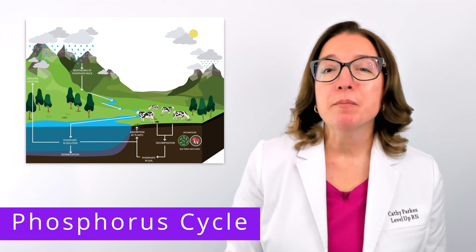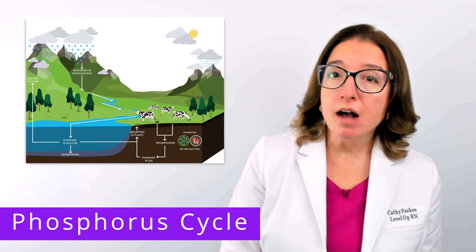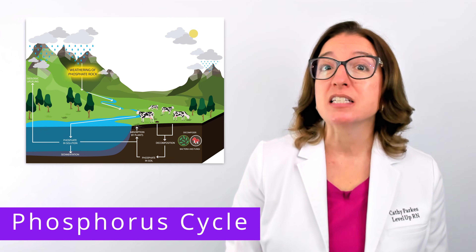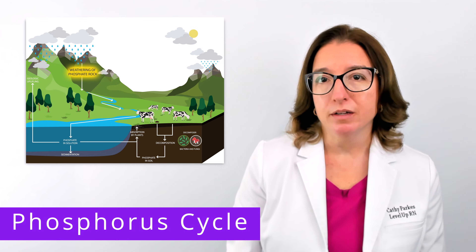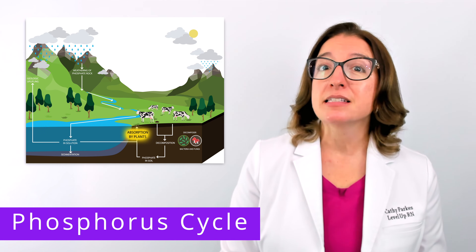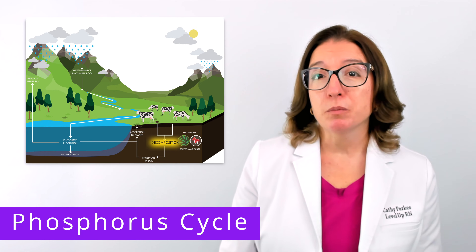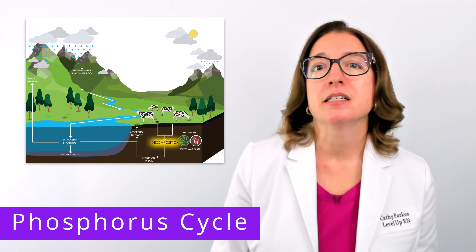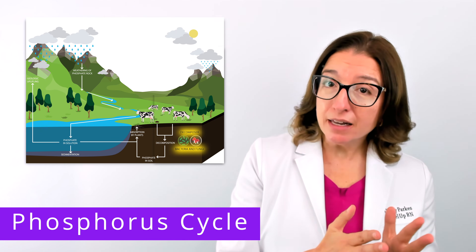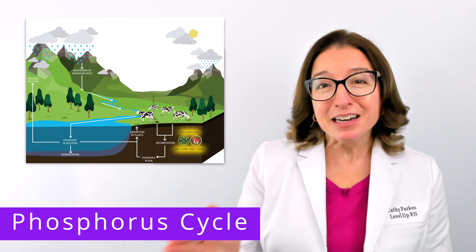Lastly, let's talk briefly about the phosphorus cycle. Most phosphorus is found in rocks and sediments, and weathering causes the rocks to release phosphate ions into the water and soil. Plants take in the inorganic phosphate, and some plants are consumed by animals. When plants and animals die, organic phosphate is released into the soil, and then bacteria convert this organic phosphorus into its inorganic form, where it can be taken up by plants again.